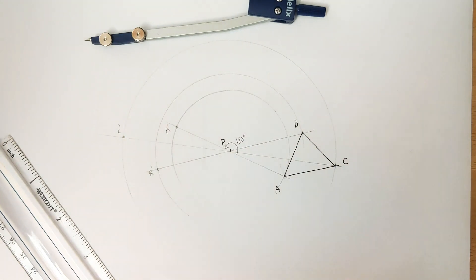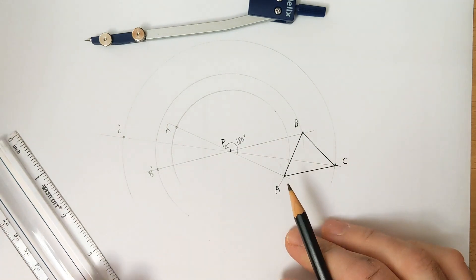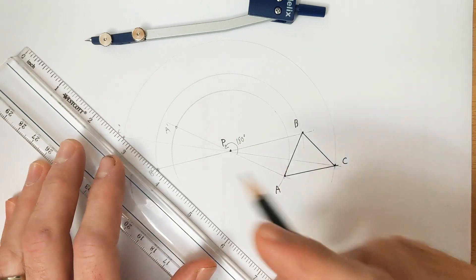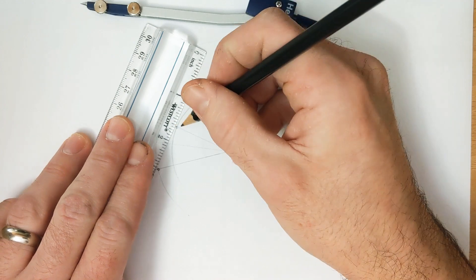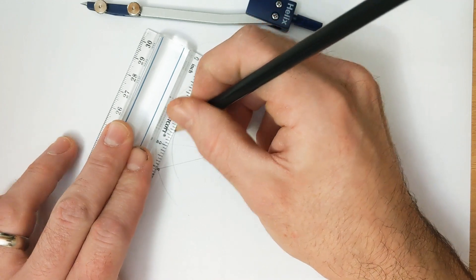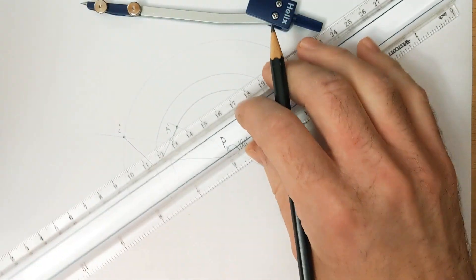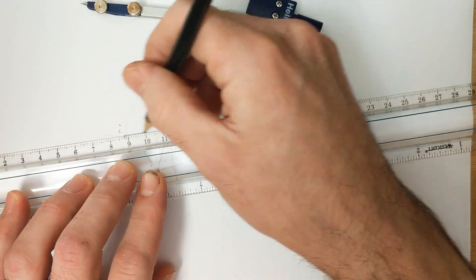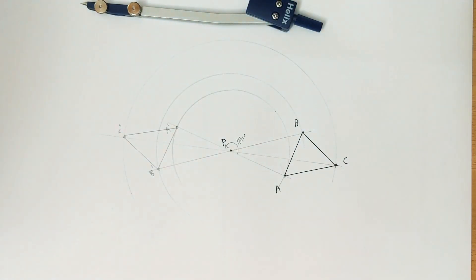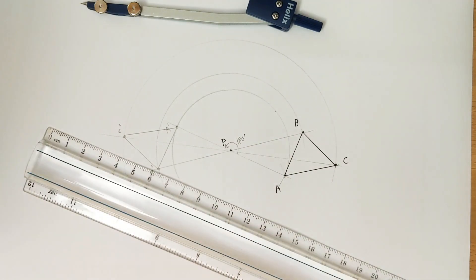And then we just make sure we reconnect the points in the same order. Lucky for us, a triangle only has one way to connect points. And there we go. That's how you rotate a figure 180 degrees around a center of rotation using just a compass and a straight edge.